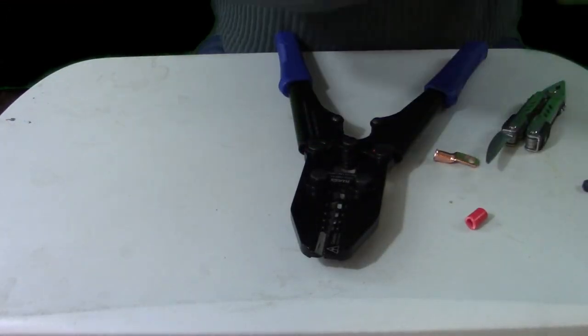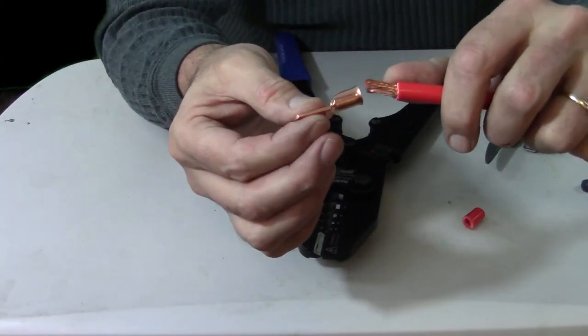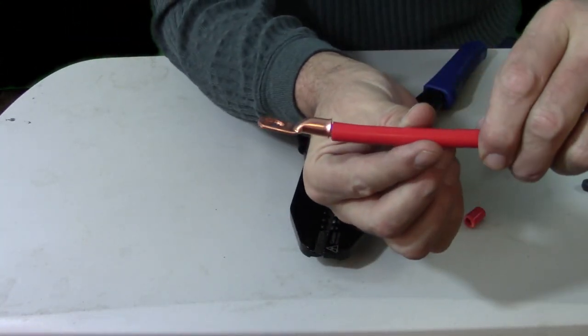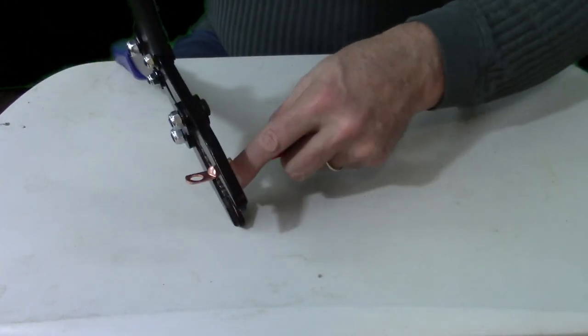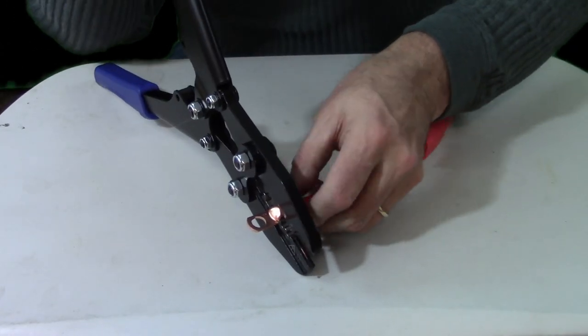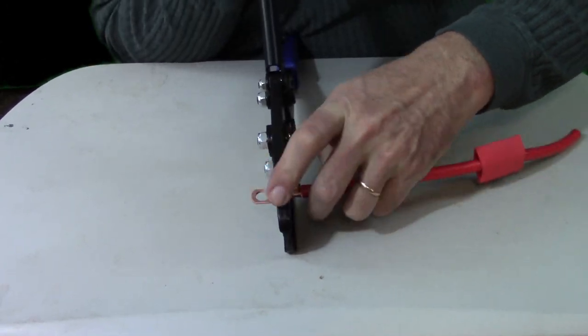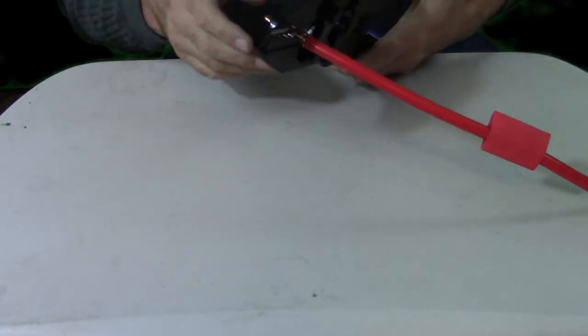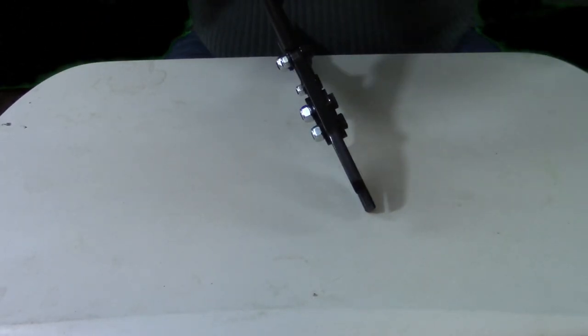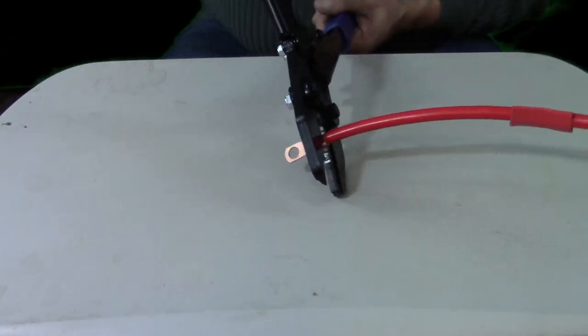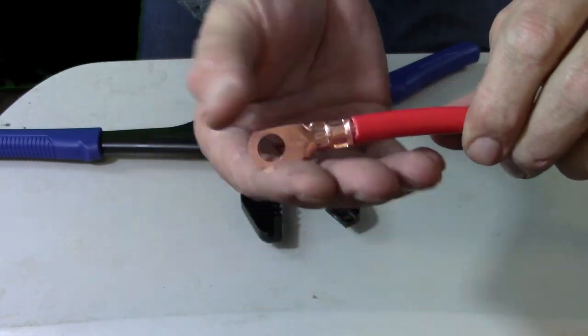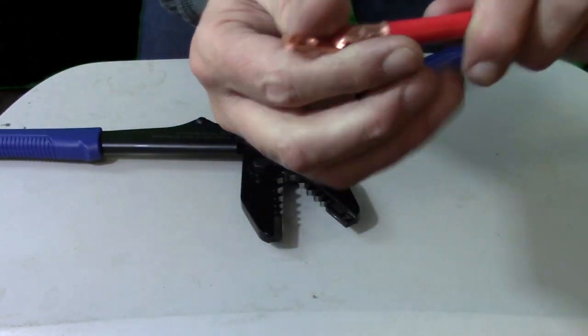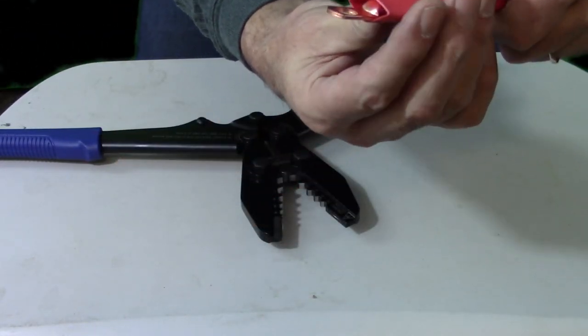Put it into the jaws of the crimper, crimp down a little bit and just kind of go back and forth on the wire. And the sheathing finishes breaking right off. Again, two crimps. Always want to start closest to the outside edge of the lug, closest to the end where the holes are, and then work your way towards the cable when you're crimping.